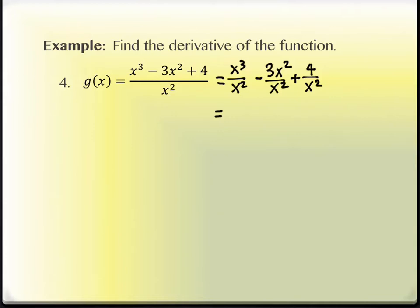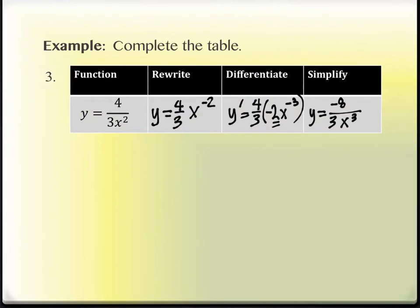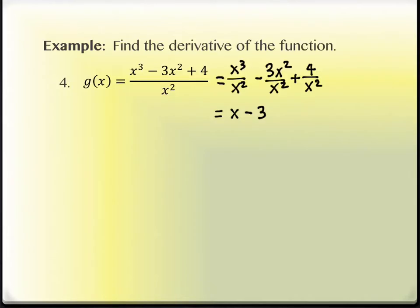What is x cubed divided by x squared? Just x. What is 3x squared divided by x squared? Just 3, and it's negative because of the subtraction sign. The last piece, 4 over x squared, is almost like our previous example — I can rewrite that as 4x to the negative 2. It's important to realize that I've done no calculus here — that's all algebra, just manipulating the expression. The calculus step is the differentiation step.